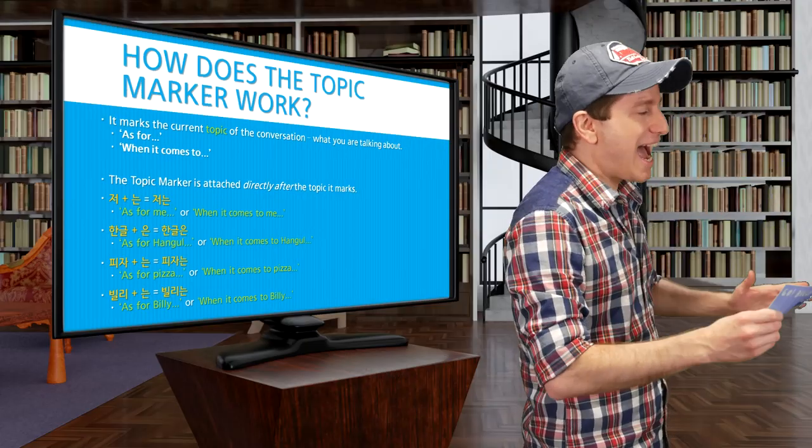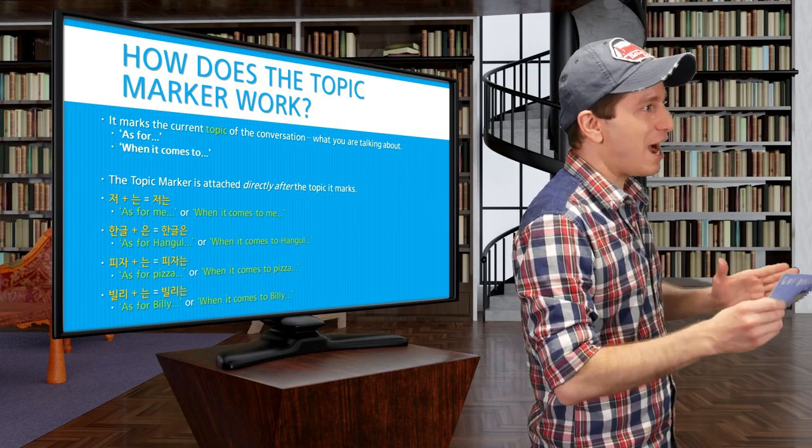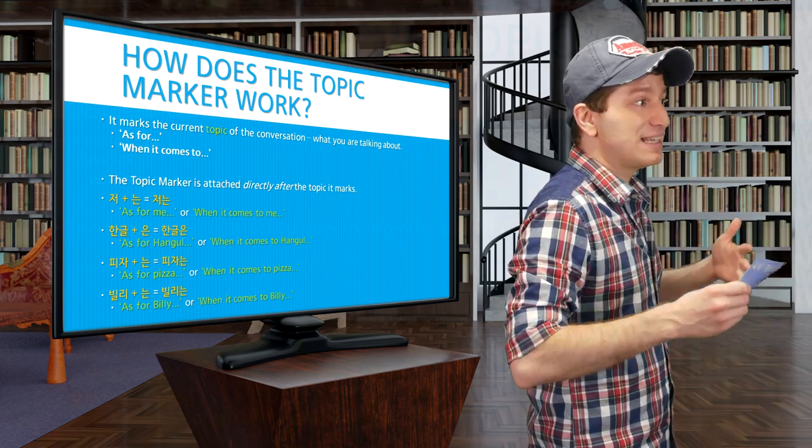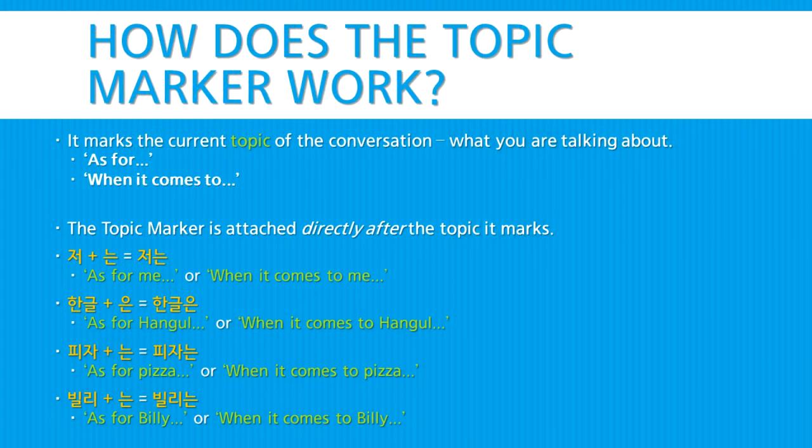The topic marker again is attached directly after the noun that it's talking about. So let's take our other example: 저는, 저, meaning I or me. So this means something like, as for me, or when it comes to me. 한글은, as for 한글, or when it comes to 한글. And then you can say whatever you want about 한글, because now 한글 is the topic.